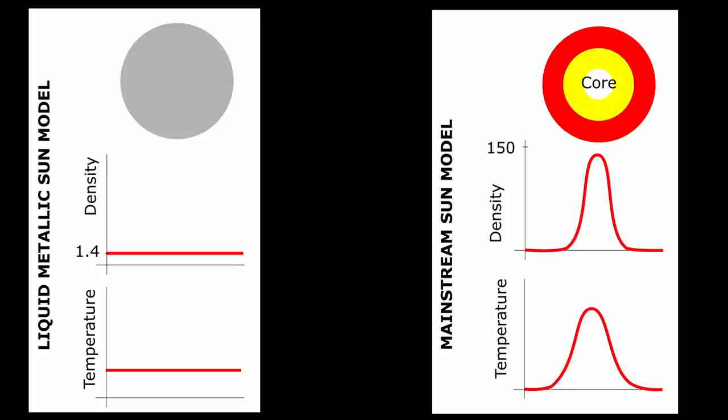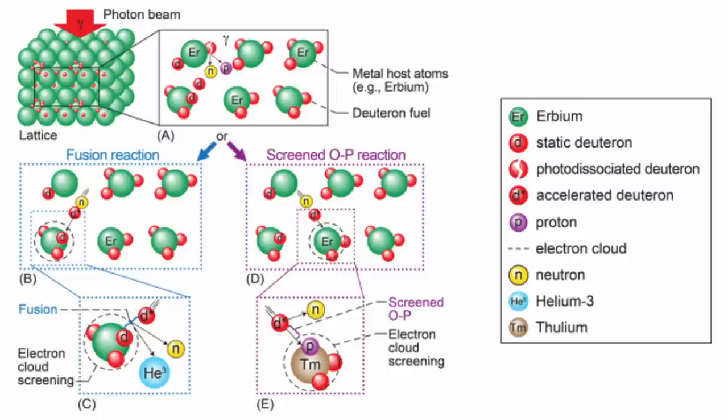In some of his more recent videos he refers to lattice fusion experiments conducted by NASA. Here deuterium atoms are injected into a metal lattice and a neutron can then trigger a fusion reaction within the lattice.